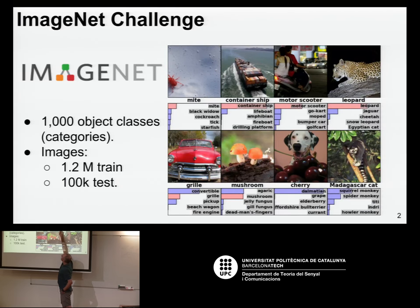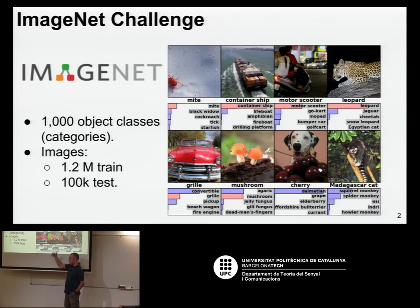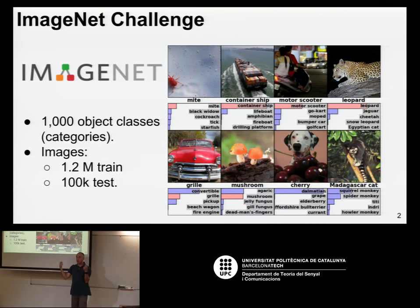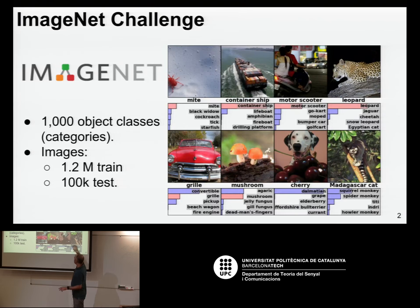What you have below are different classes — like container ship, lifeboat, amphibian, fireboat, drilling platform. These classes were predicted by the model, and the bar tells you the confidence of the model when doing the prediction. The larger the bar, the more confident. You would like the correct class — shown in white — to be at the top of the list.